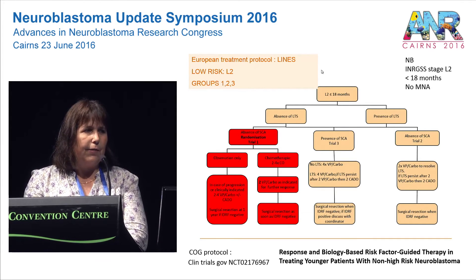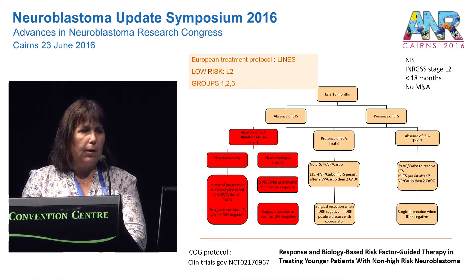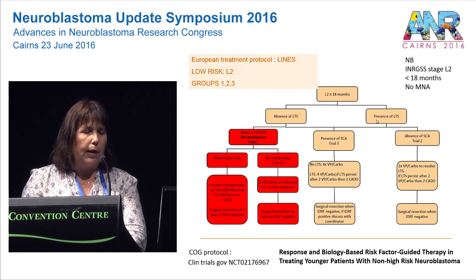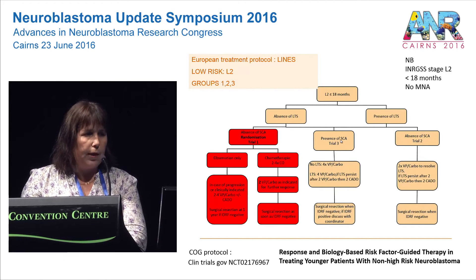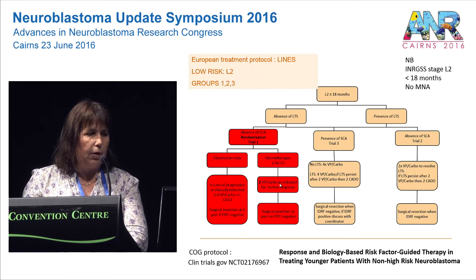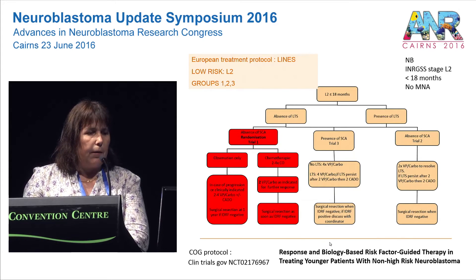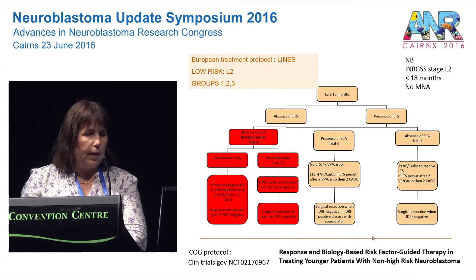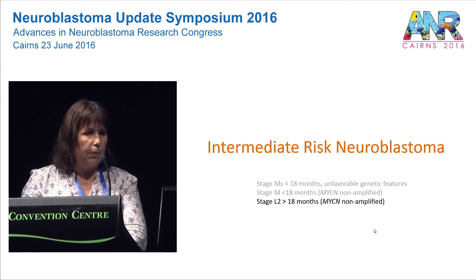This is an example of the LINES trial. Patients aged less than 18 months, no MYCN amplification, with localized unresectable disease. We need to assess whether there are any life-threatening symptoms. In the absence of life-threatening symptoms, the genomic profile is taken into account. In the absence of segmental chromosome alterations, this prospective trial randomizes between observation only and the standard chemotherapy arm. COG is running a similar trial with stratified treatment according to response and biology based on copy number profiling.